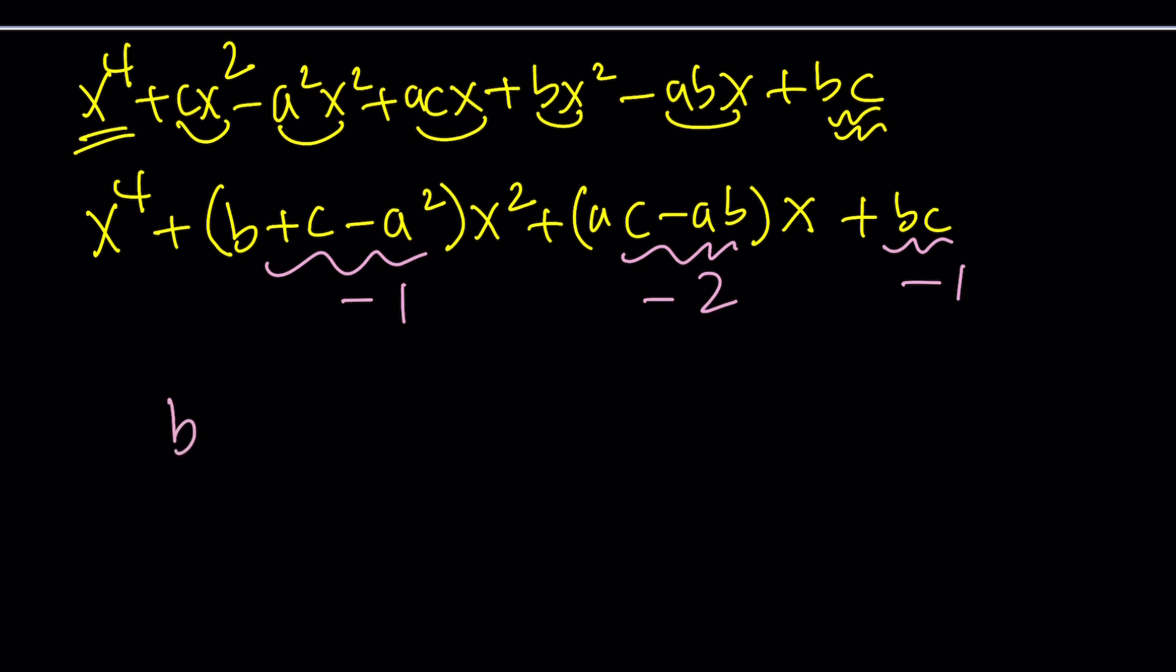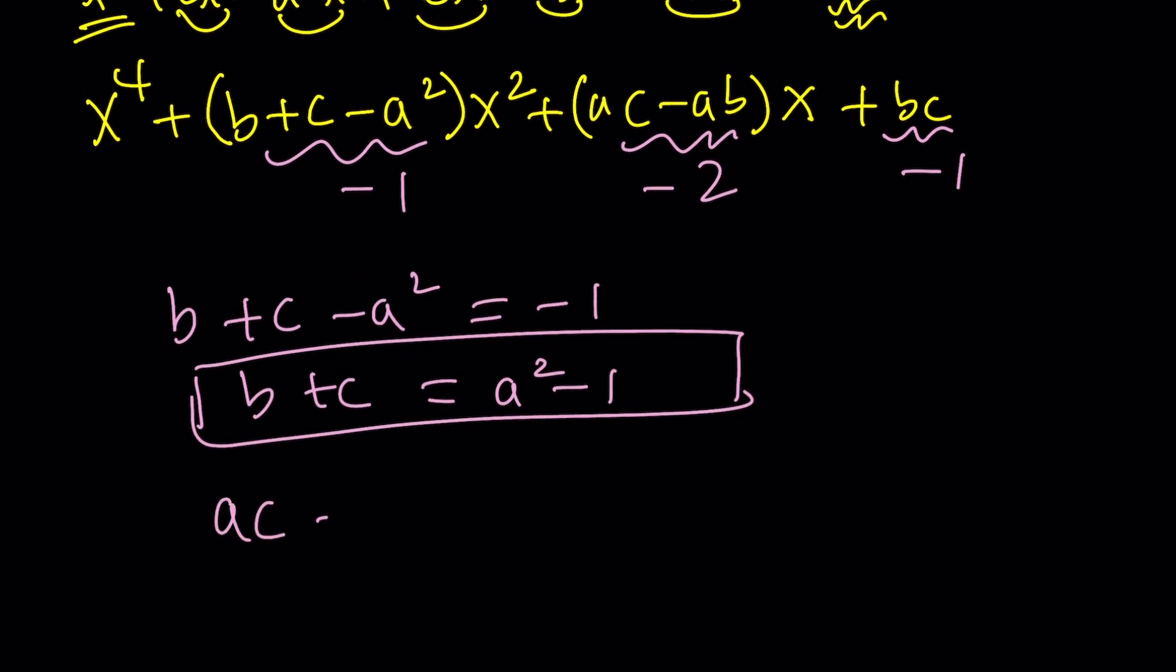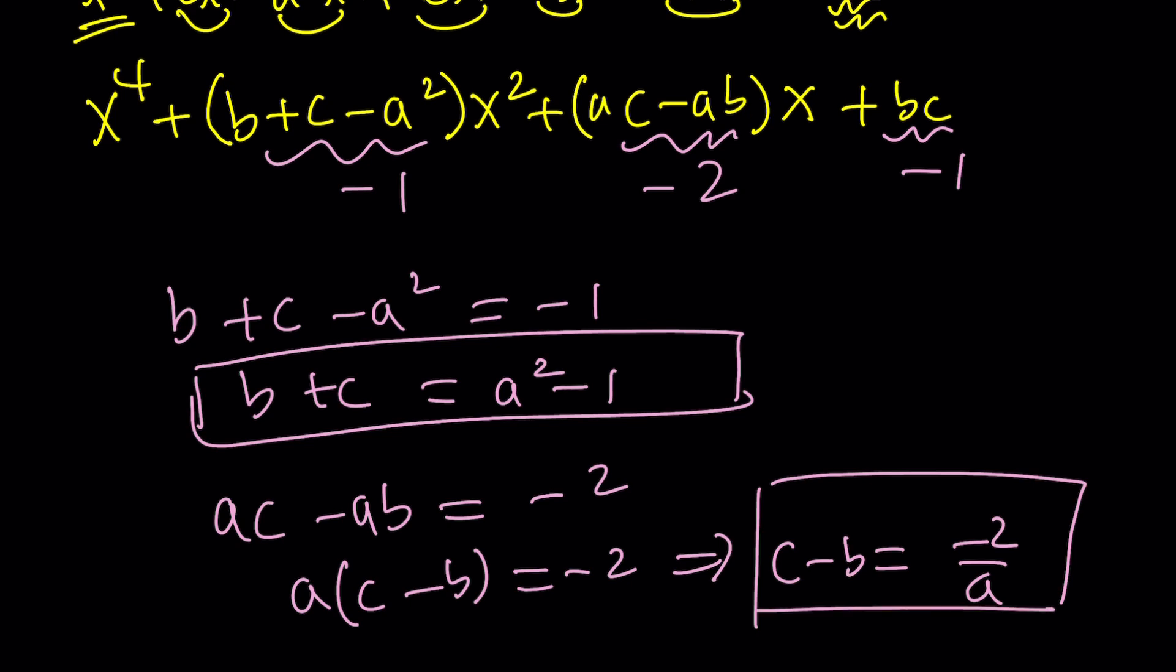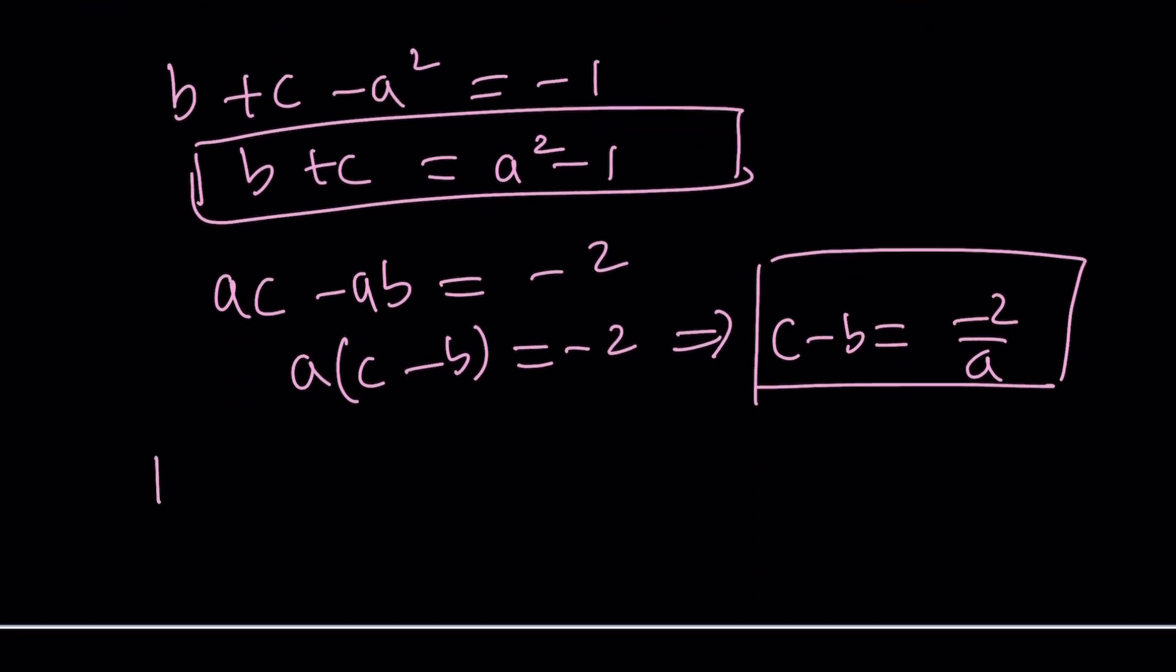When you set this equal to that, you realize that the coefficient of x squared is supposed to be negative 1, and the coefficient of x is supposed to be negative 2, and the constant term is supposed to be negative 1. This gives you three equations and three variables. From here, we get this, which I can turn into this one. Let's box it because we're going to use it later. From the second one, we get this. I can factor out an a, and then divide by a. Get c minus b equals negative 2 over a. Let's box it.